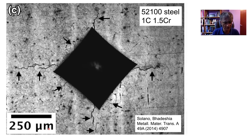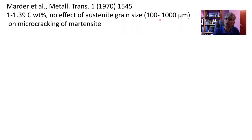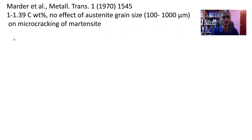Some time ago, studies were done on this microscopic cracking that happens when you quench high carbon steel to form martensite. One of the first studies was by Marder and Krauss and co-workers in 1970, looking at extremely high carbon steel — 1 to 1.48% — with austenite grain sizes ranging from 100 to 1000 micrometers. They found that all of the plates were microcracked irrespective of the austenite grain size.